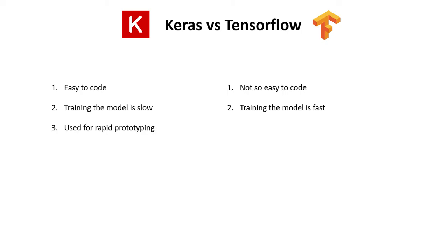As writing code in Keras is extremely easy, it is mostly used for rapid prototyping. We can quickly build a model, test the performance, and make design changes as required. Whereas TensorFlow is mainly used for bigger and higher level applications. It is also possible to quickly design the architecture in Keras, and once we finalize the architecture, we can implement the same in TensorFlow to create full-fledged applications with bigger data and faster performance.